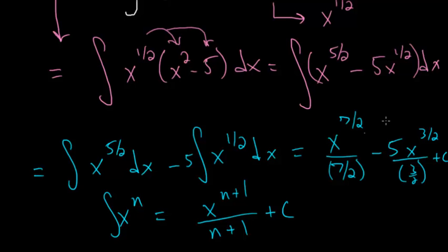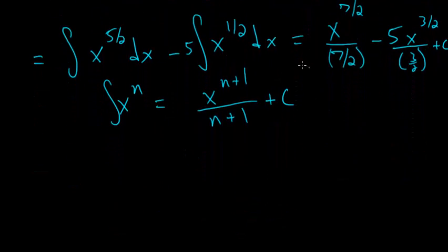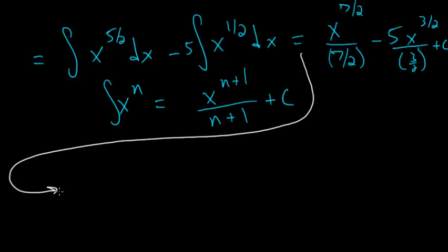Now we can simplify this. So our integral is equal to, division by seven-halves is the same thing as multiplication by two-sevenths. So we have two x to the seven-halves divided by seven, minus, here we have divided by three-halves, which is the same thing as multiplying by two-thirds.